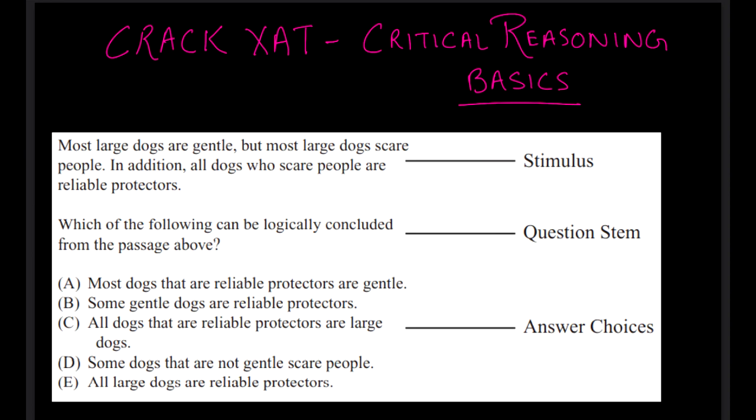Number one is stimulus, number two is question stem, and number three are the option choices. The first mistake that I've seen maximum students make is that people focus on reading the question first and then the stimulus and then the answer choices.